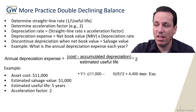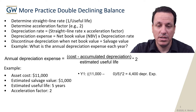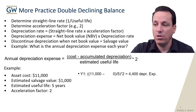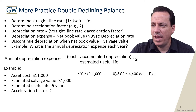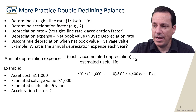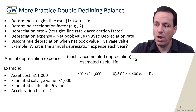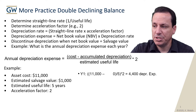In year one, we have $11,000 minus zero in accumulated depreciation. That over five years times two equals $4,400 in depreciation expense.